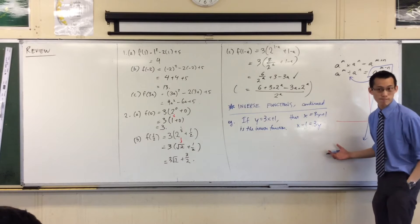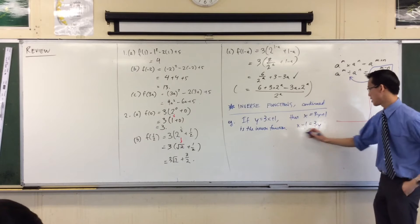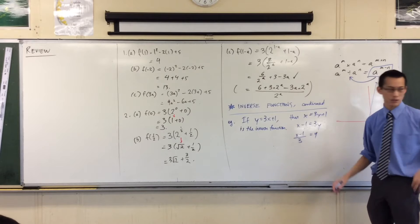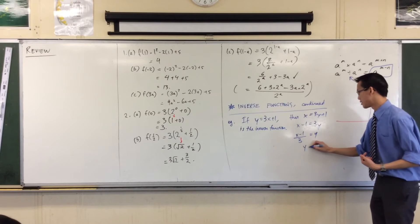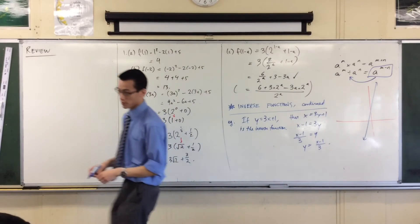And then I only have to do one more thing to get y by itself, rather than 3y. What do I do? Yeah, I'm going to divide both sides by 3. So that gives me x minus 1 over 3 equals y. And I'll just flip around a little bit. So you can see I get this. So here's my inverse function.